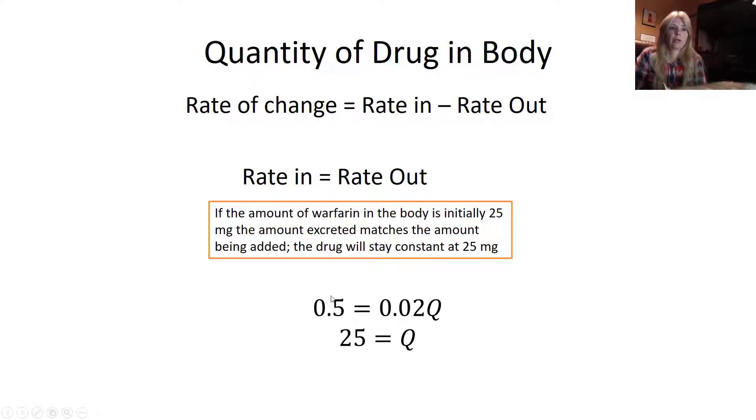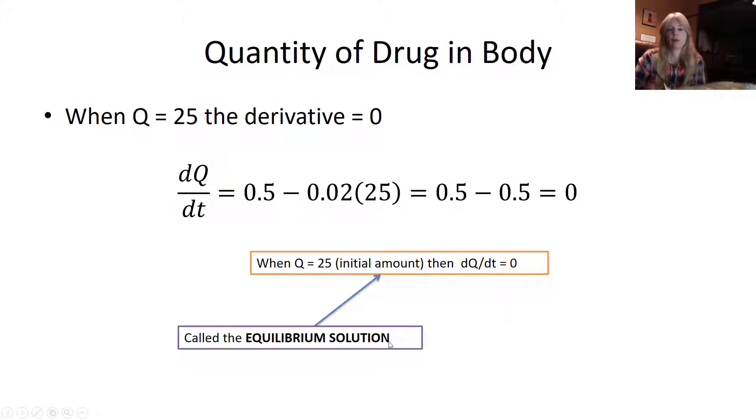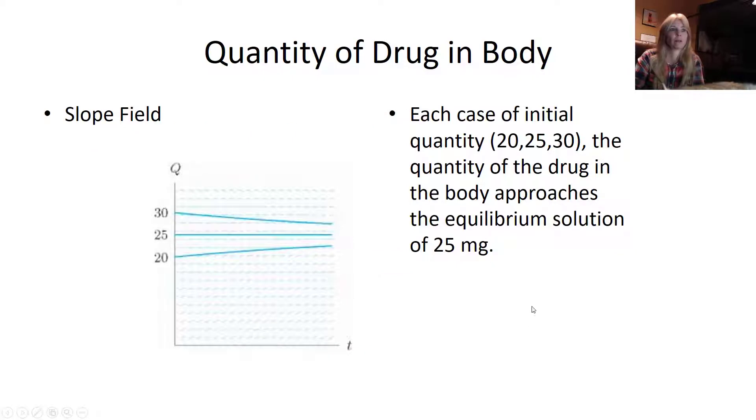So for example here, if I moved the 0.5 to the other side and solved for Q, when Q equals 25, if this is the initial amount, you can see my differential equation equals 0. This is called the equilibrium solution. So if you're asked to find the equilibrium solution, you set your differential equation equal to 0 and solve for Q to get 25.